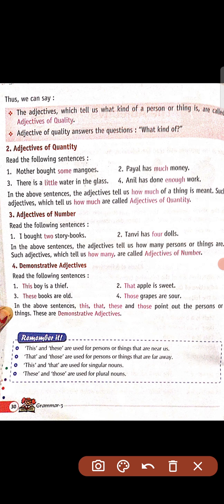Thus we can see the adjectives which tell us what kind of a person or thing it is are called adjective of quality. Toh hum keh sakte hain ki woh adjective jo aapko batata hai ki person ya koi cheez ka rang ya type kaisa hai, woh adjective of quality hote hain. Adjective of quality answers the question: what kind of?